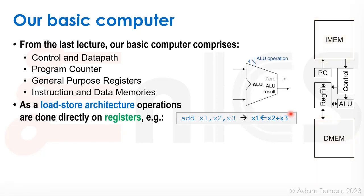We're talking about RISC machines, which are mainly load-store architectures. That means we do all our operations directly on registers. For example, an assembly command like ADD x1, x2, x3 maps to: x1 gets the data in x2 plus the data in x3. This means we have an ALU adder that gets two source operands x2 and x3, produces a result stored back into x1, with a control code telling it to perform an add or some other type of operation.